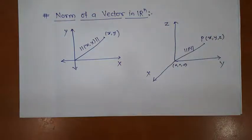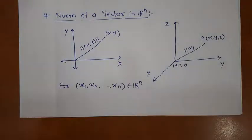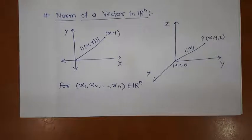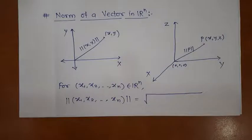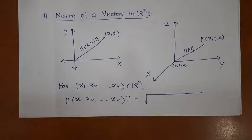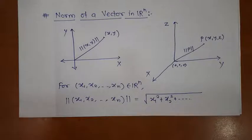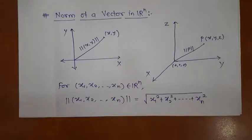So let us see what is the formula for norm. If we have any point in Rn as (x1, x2, ..., xn), then its norm is defined as the square root of the square of the first component plus the square of the second component, plus and so on, up to the square of the last component.